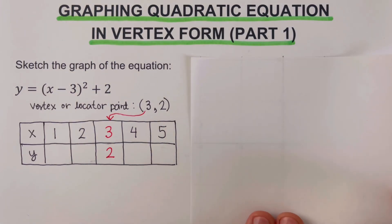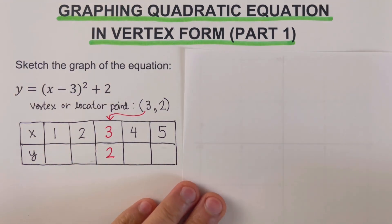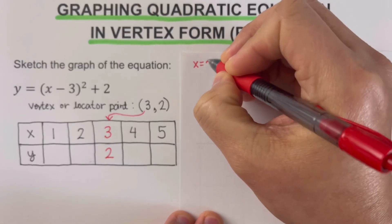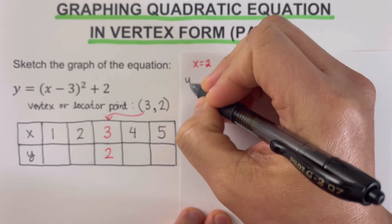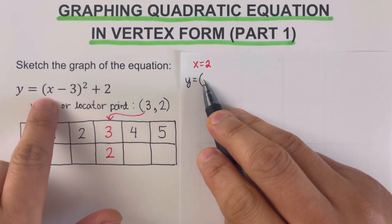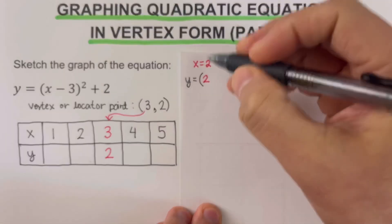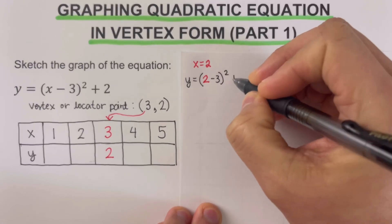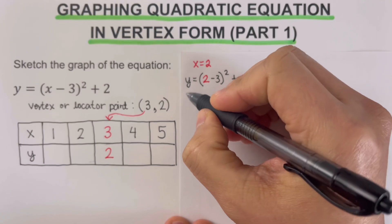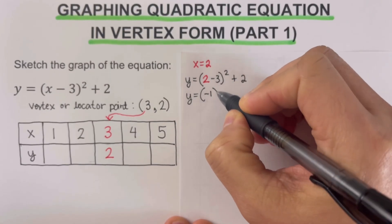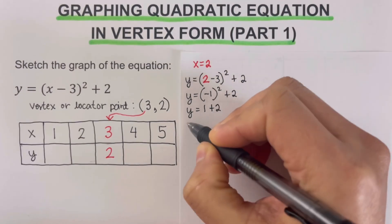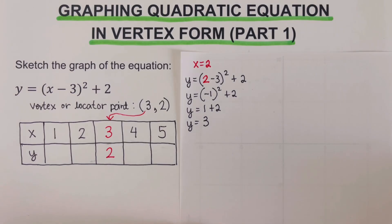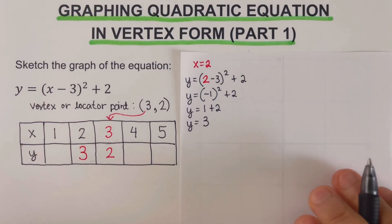We start with x equals 2. Plugging into the equation: y equals the quantity 2 minus 3 squared plus 2. Two minus 3 is negative 1, and negative 1 squared is positive 1. Then 1 plus 2 gives y equals 3. So when x is 2, y is 3.